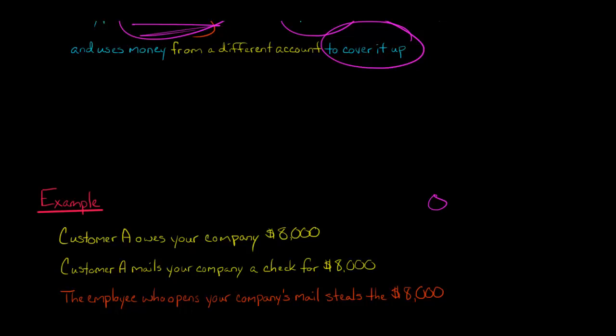So instead of this customer's balance being zero, it's going to be $8,000 still because it doesn't reflect that this employee stole the money, so it never gets credited against this customer's account. So what is going to happen?